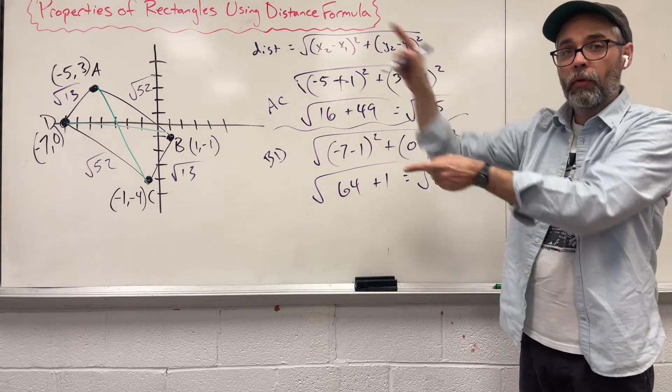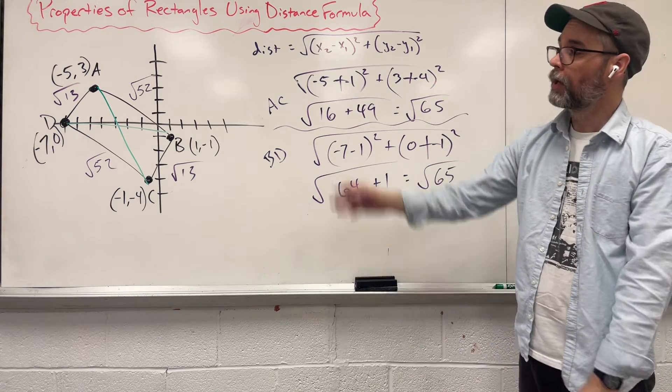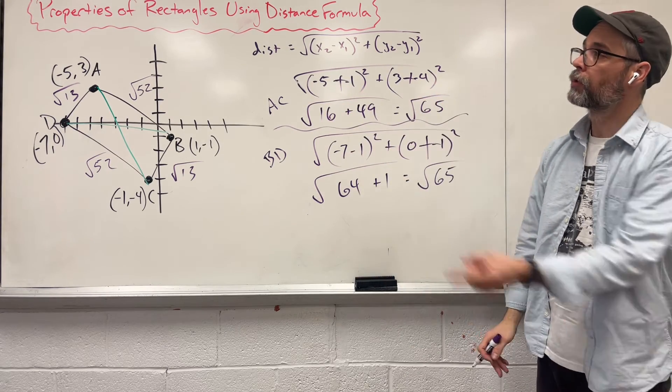Opposite sides are the same. They're congruent. Our diagonals are the same. They're congruent. So because of sides and diagonals, we just proved, yes, in fact, we do have a rectangle there.